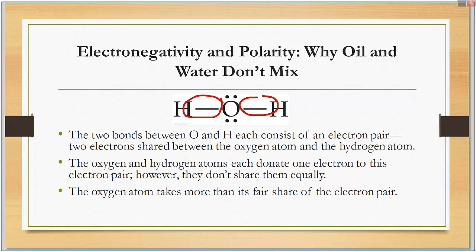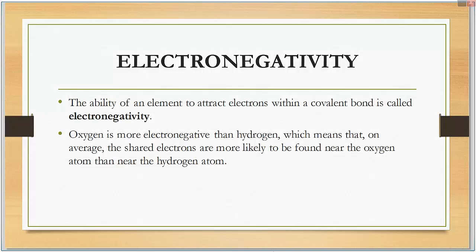However, they don't share them equally. The oxygen atom takes more of its share of the electron pair, so the electrons tend to drift towards the oxygen. This is called electronegativity. The ability of an element to attract electrons within a covalent bond is electronegativity.